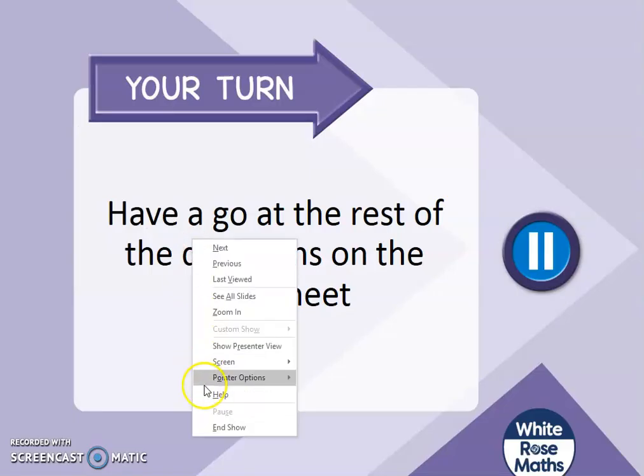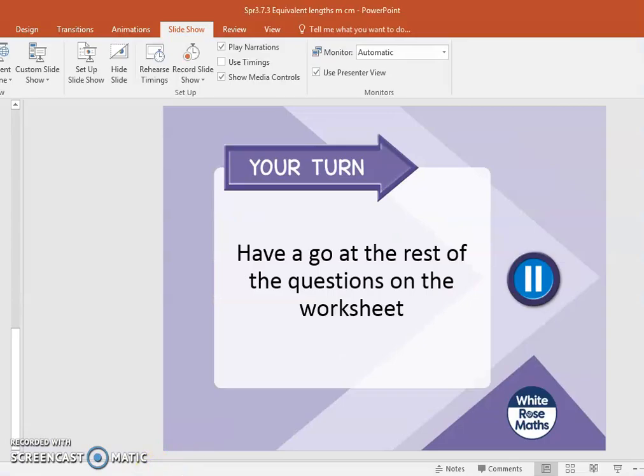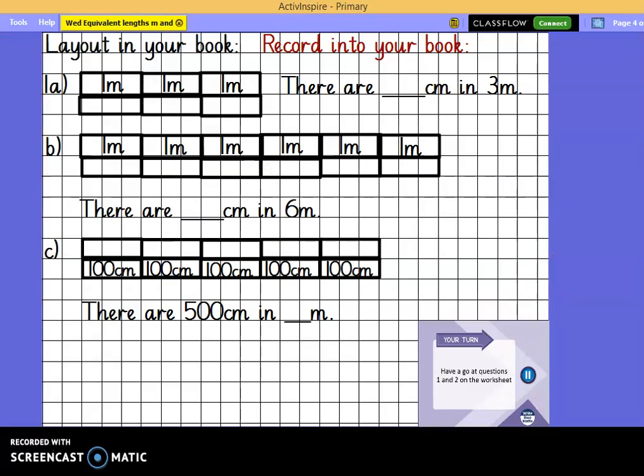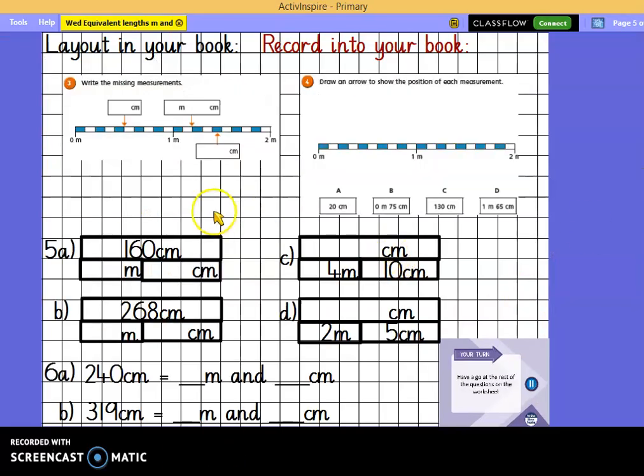Your turn please to have a go at the rest of the questions on your worksheet. Here's how I'd like you to record that in your book. Number 3 and 4 you may cut out and stick neatly. Line it up with the squares in your book. Number 5 and so on. You can see how I'd like you to record that in your book. Pause the video to show yourself how to do that. And complete that learning to the end of the rest of the questions.